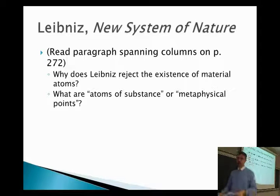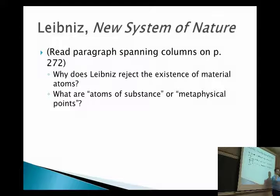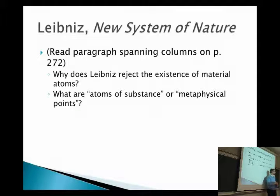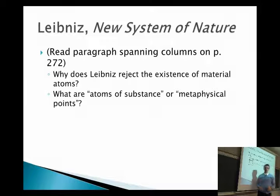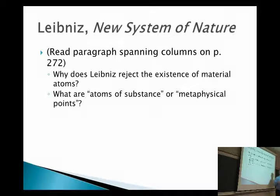Leibniz is often referred to as an idealist — which doesn't mean a dreamer or somebody who wants world peace — but an idealist in the sense that the most basic part of reality is not matter, but thought or immateriality. We're going to read about another idealist later in this course named Berkeley. For now, let's think about Leibniz as an idealist. He believes the universe is made up of immaterial atoms.